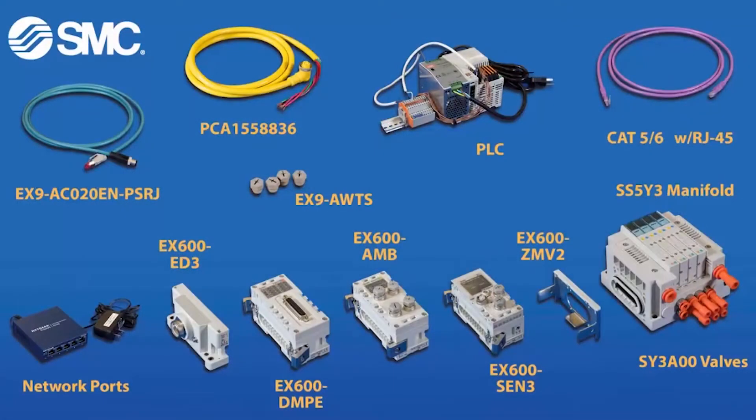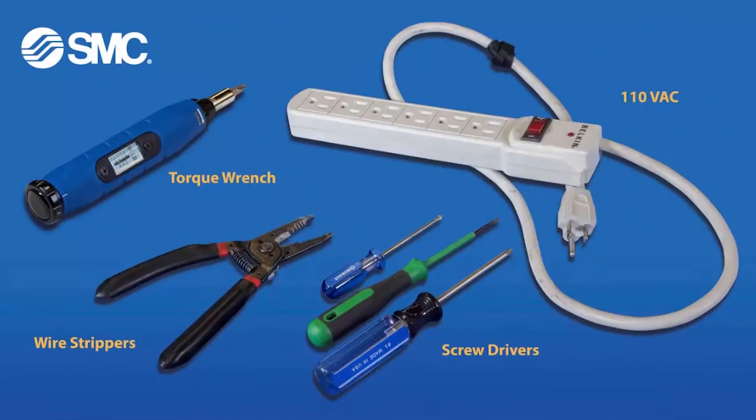These are the parts and part numbers that you will need in order to connect your Ethernet IP EX600 to your PLC. These are the tools that you will need to hook everything up.